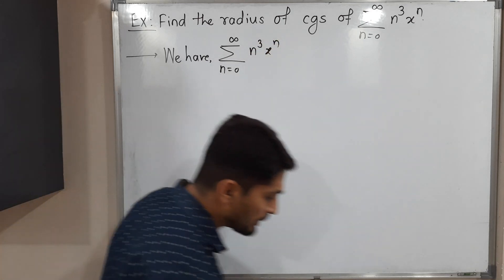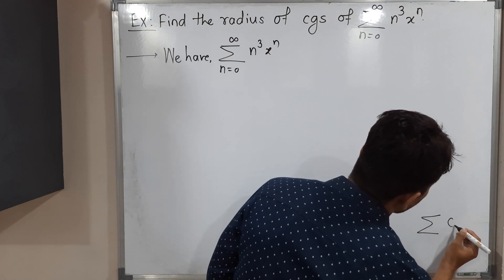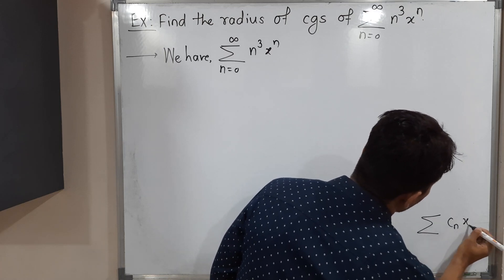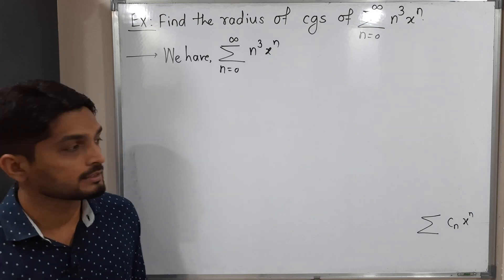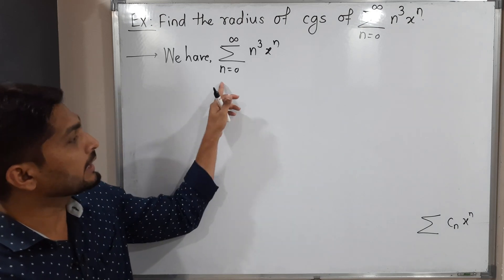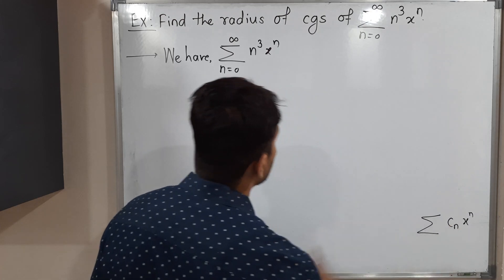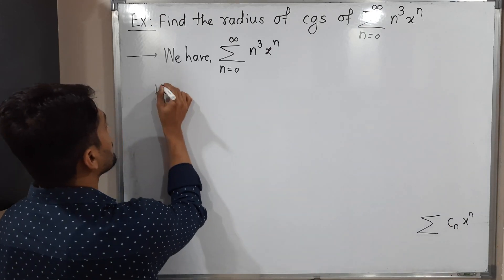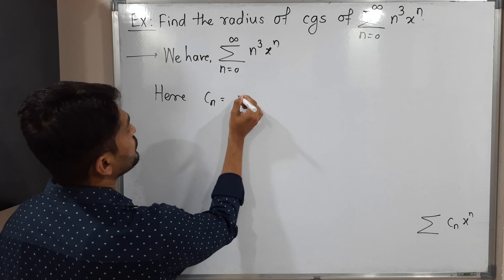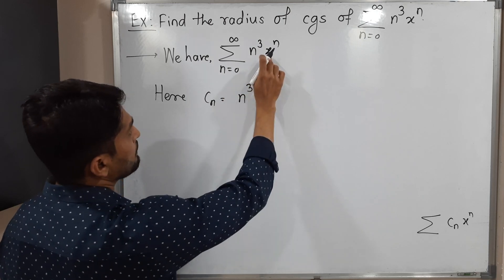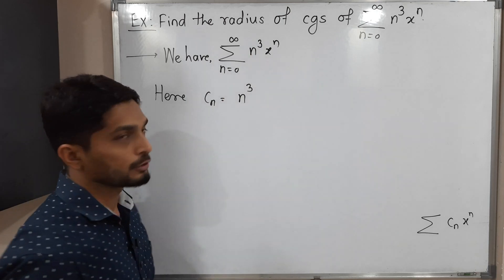We are familiar with the standard power series, which is summation cₙ x raised to n. This is the standard form of a power series. Comparing the given series with this standard form, we can easily identify cₙ — the coefficient, which is the multiple of x raised to n — as n cubed. So our cₙ is n cubed.